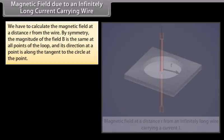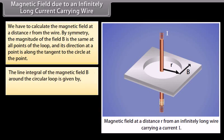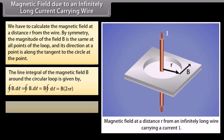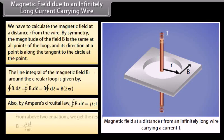Magnetic field due to an infinitely long current carrying wire: we calculate the magnetic field at a distance R from the wire. By symmetry, the magnitude of field B is the same at all points of the loop, directed tangentially. The line integral of B around the circular loop equals B times 2 pi R. By Ampere's Circuital Law, closed integral of B dot dL equals mu_0 I, giving the result B equals mu_0 I divided by 2 pi R.